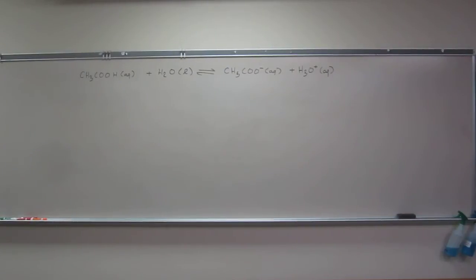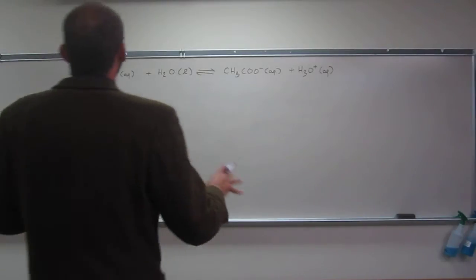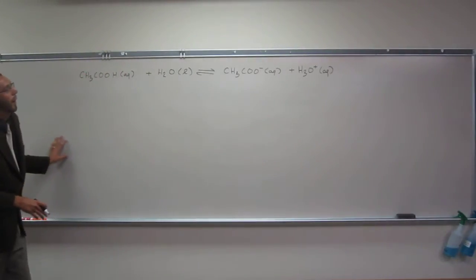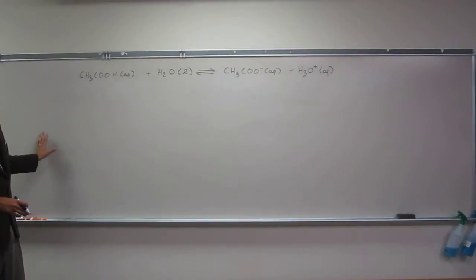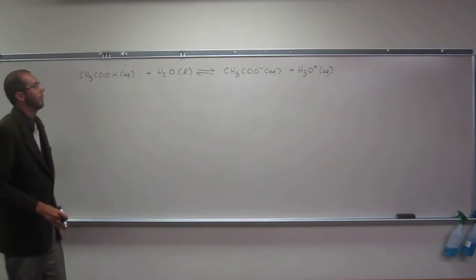So in this problem, it wants us to identify the acid, base, and conjugate acid, conjugate base. So we need to identify all four of those things. So where are the acid and base going to be, and where are the conjugate acid and conjugate base going to be?